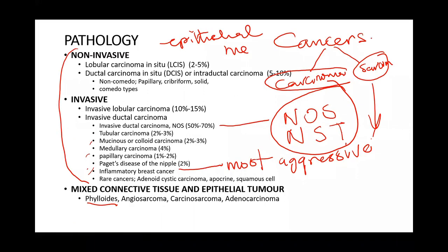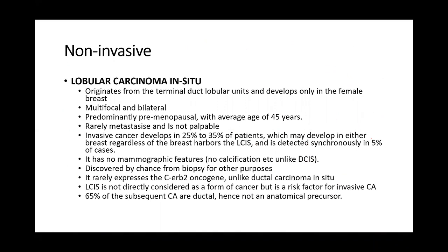Lobular carcinoma in-situ originates from the terminal duct lobular unit and develops only in the female breast. It is multifocal and bilateral — when you see a lobular carcinoma in one breast, you can have a mirror image in the contralateral breast in the same quadrant. It is predominantly premenopausal with an average age of 45 years.